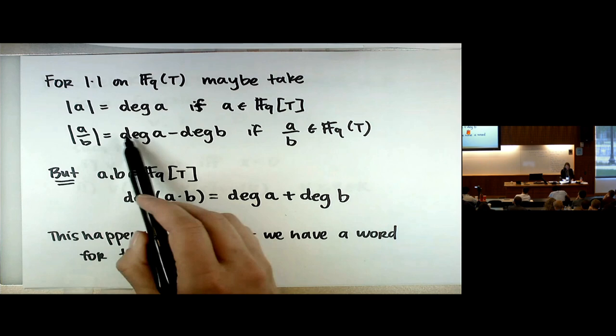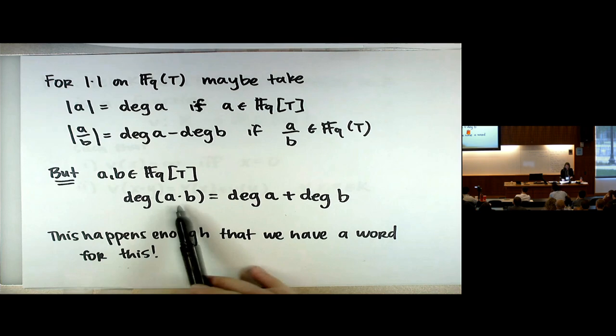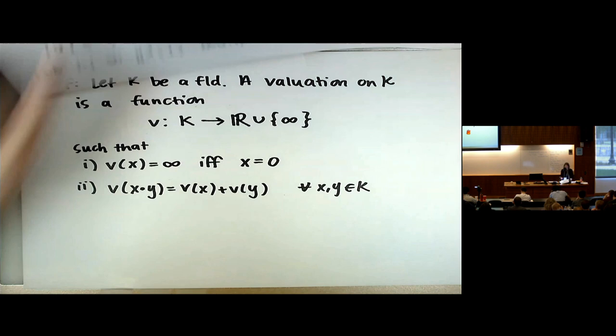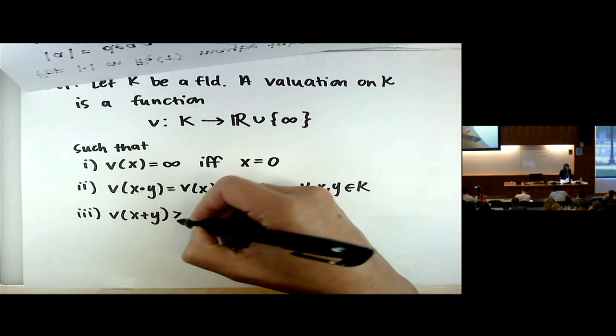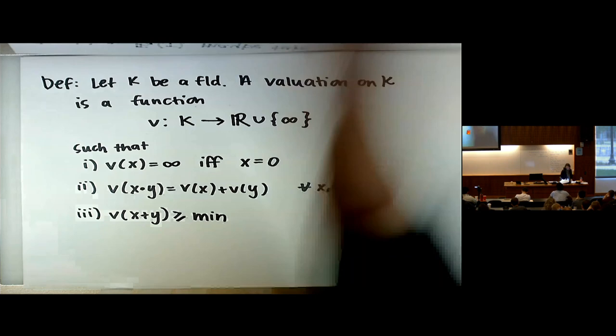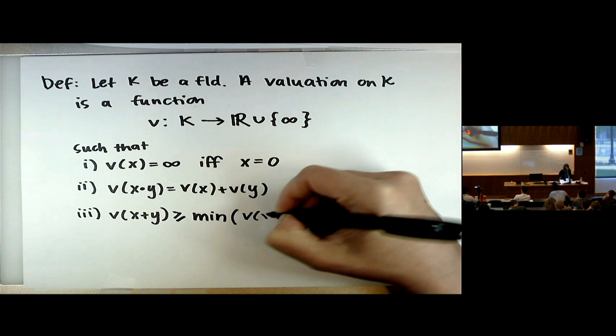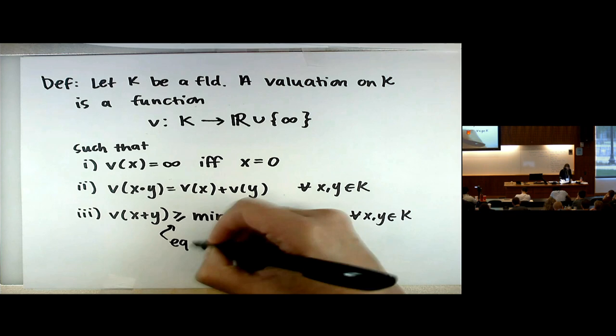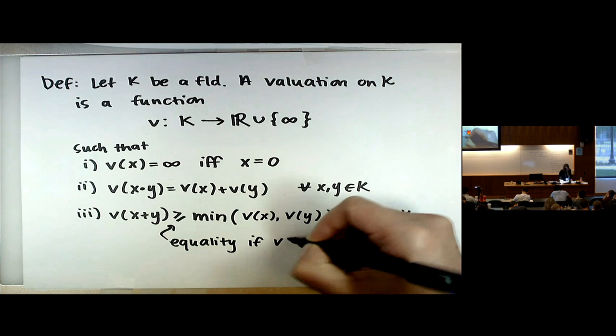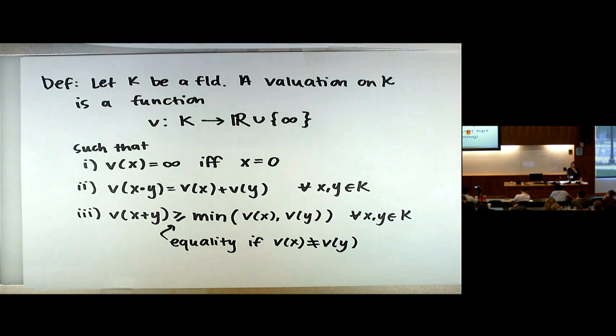The third condition is a little weird but not that weird. If only I had said I wanted the degree to be a sum rather than a product, I would win — and that's exactly what I'm doing now. The equality condition says: if the valuations are different, then V(x + y) equals exactly the minimum of V(x) and V(y).